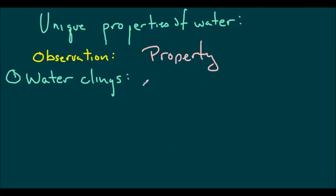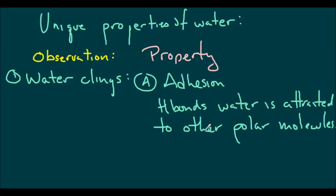And the next property we talked about was adhesion. Adhesion occurs when water is attracted to other polar molecules. So, because of H-bonds, water is attracted to other polar molecules. Adhesion usually refers to being attracted to something else besides itself. Cohesion means that water is attracted to itself. And this is most easily seen in capillary action.